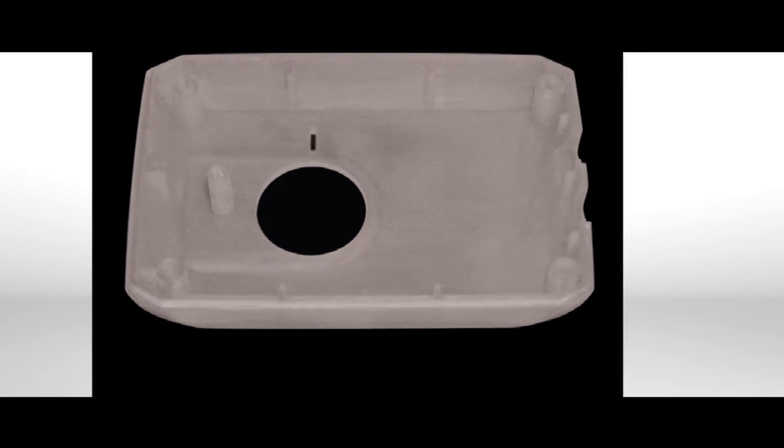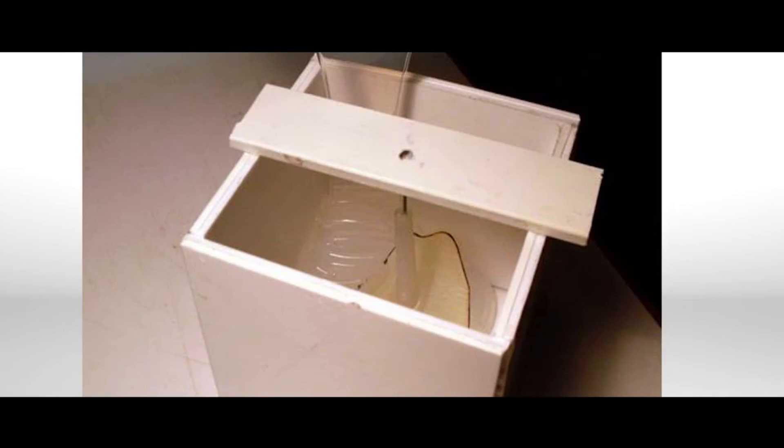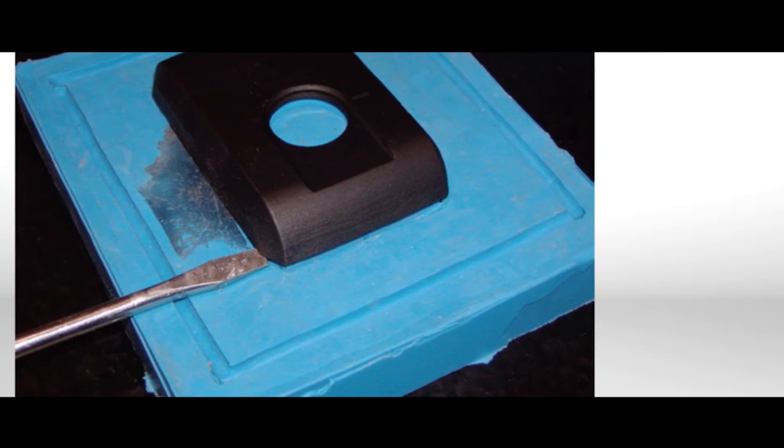Silicone molding is a three-step process: make a pattern, make a mold, and cast parts.